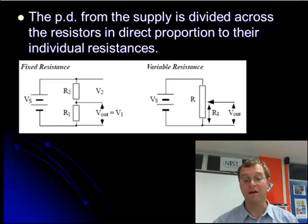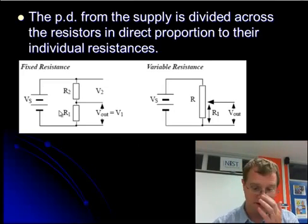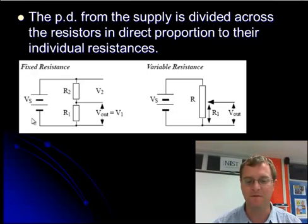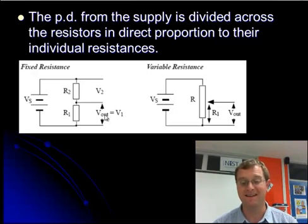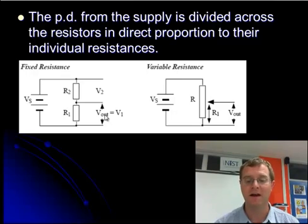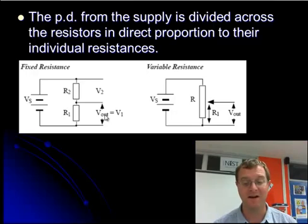These look a little bit like this. So what we'll see is that Vs stands for voltage supply. And what we have in my first example on the left with a fixed resistance, I have resistance 2 and resistance 1. And the voltage across resistance 2 is a value I can work out. And the voltage across resistance 1, which I can extract from the circuit and use in some way, is V1 or Vout. So that's if I want a fixed value.